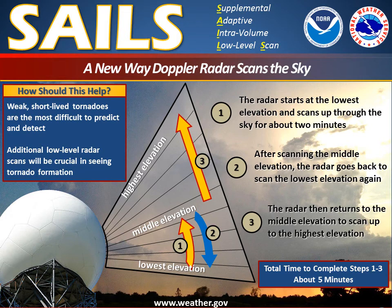And what this will give us is a new cycle of images every four to five minutes. But with recent technology, that's actually been cut in half, or even less than that — where the radar, we call it the SAILS mode. The radar starts at the base elevation, it does the first several cuts up, and then it goes back down to the base elevation, and does its circle, then goes back to where it left off, and does the top elevation scans.